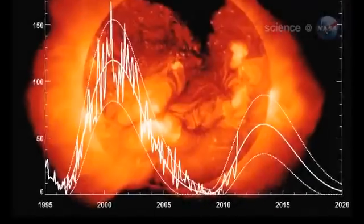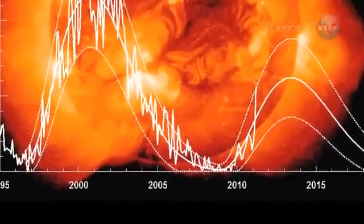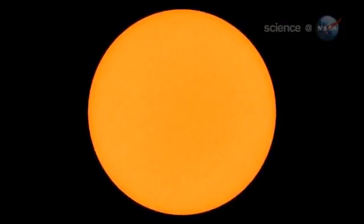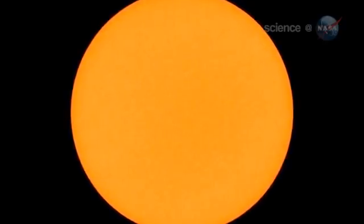Back in 2008, the solar cycle plunged into the deepest minimum in nearly a century. Sunspots all but vanished, solar flares subsided, and the Sun was eerily quiet.